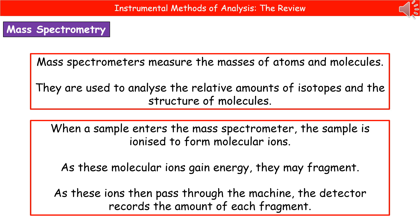The second technique that we can use is mass spectrometry. The mass spec actually measures the masses of atoms and molecules, as the name really suggests. What we can do with this is analyze the relative amounts of the different isotopes. And we can also use it to analyze the structure of molecules.